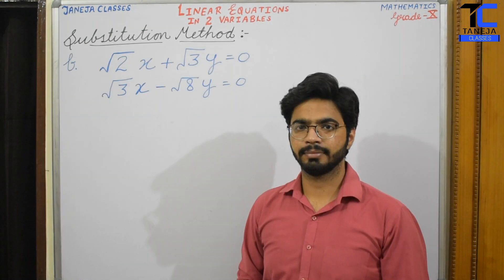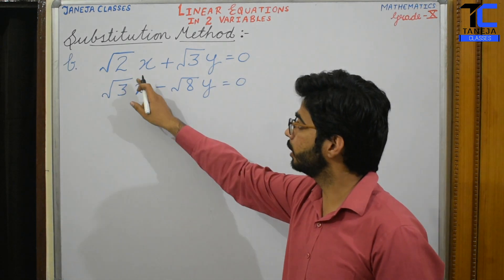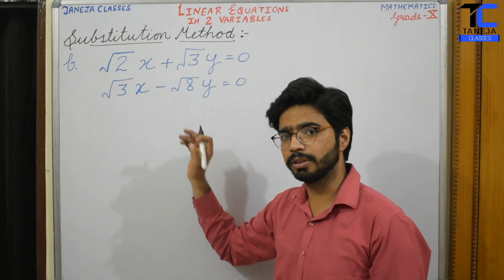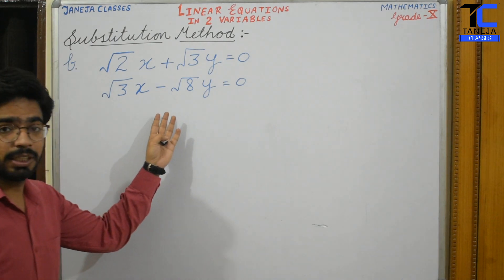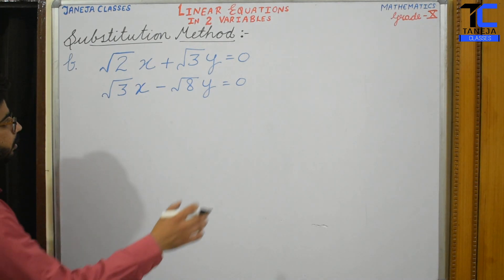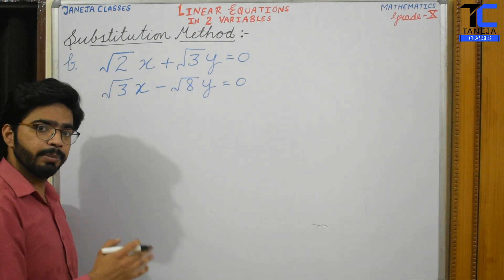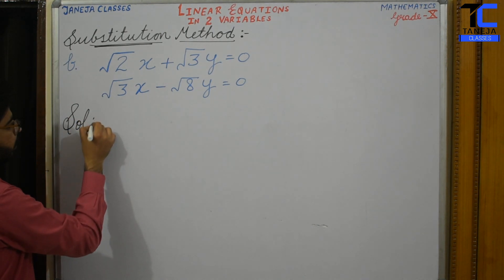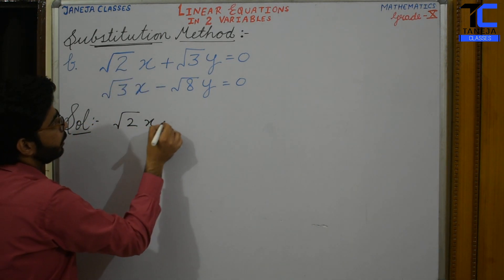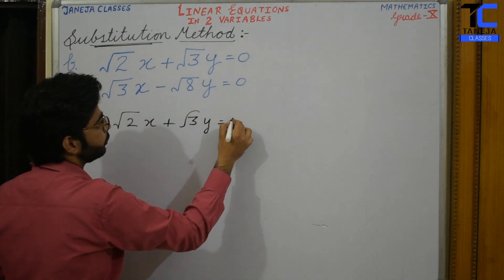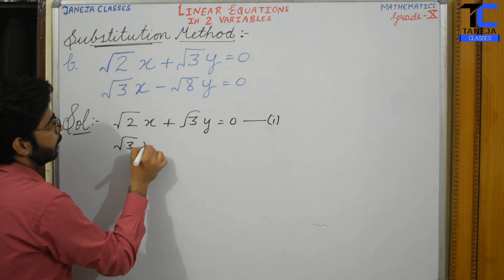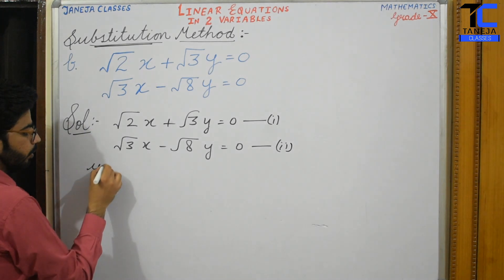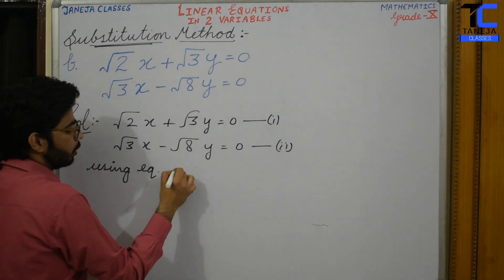Let us take this question: root 2 times x plus root 3 times y is equal to 0, and root 3 times x minus root 8 times y is equal to 0. I have taken this question because many students have a fear of roots. Let this be equation 1, and root 3x minus root 8y equals 0 be equation 2. We can use equation 1 or 2; this time I am using equation 1.